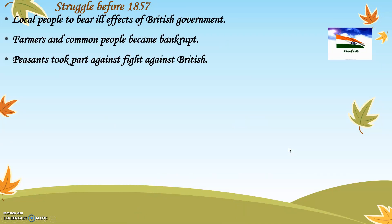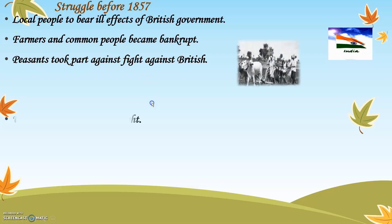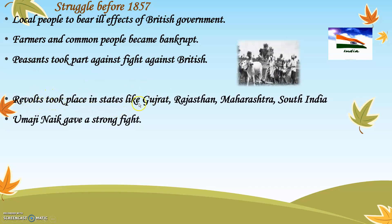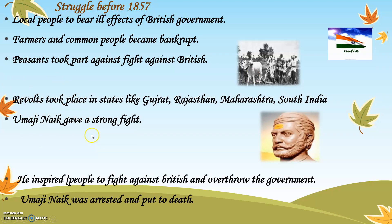Let us understand the background of Indian society. India was ruled by the British government, and the common people — the local and middle-class people — had to suffer a lot because of British policies, especially the farmers. Because of new British policies, farmers were forced to pay heavy taxes. Being unable to pay, they took loans from the bank, and since they couldn't repay, the people became bankrupt. Revolts took place in states like Gujarat, Maharashtra, and South India, and there was a person called Umarji Naik who helped the farmers fight against the Britishers.